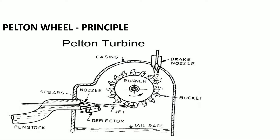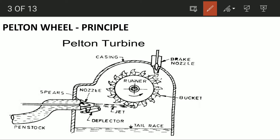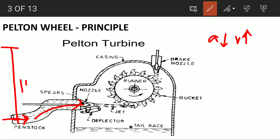The Pelton Wheel is the main item. This is the front view of the Pelton Wheel.